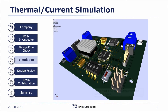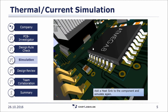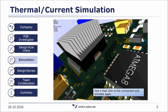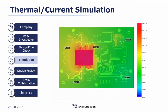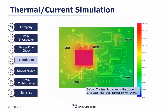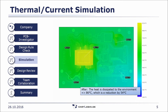Another reasonable way to reduce the temperature could be a heat sink. With PCB Investigator, you have the possibility to configure and simulate a fitting heat sink for any component. We see the situation before doing any optimization — the heat was trapped and we had approximately 140 degrees on the board. By adding the heat sink, the temperature can be reduced by 45 degrees, as the heat can much better dissipate to the environment.